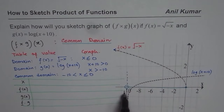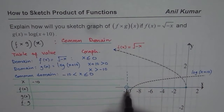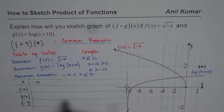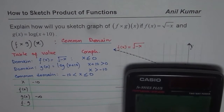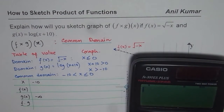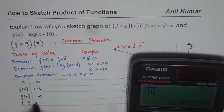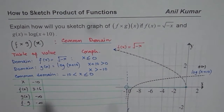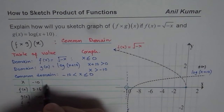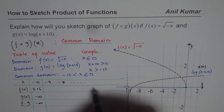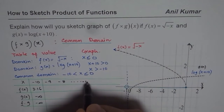To begin with, we can consider x equals minus 10 as our first value. For minus 10, g of x, which is the log function, is approaching minus infinity. For f of x, it is square root of 10, which gives us 3.16. When we multiply them we are approaching minus infinity, so that is an important boundary parameter. We can then calculate for values like minus 9, minus 8, and so on up to 0.